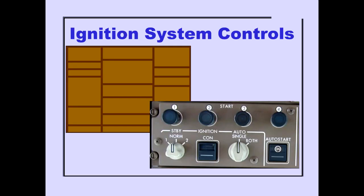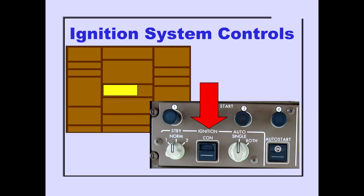Controls for the ignition system are located on the overhead panel. They consist of a standby ignition selector, a continuous ignition switch, and an auto-ignition selector.